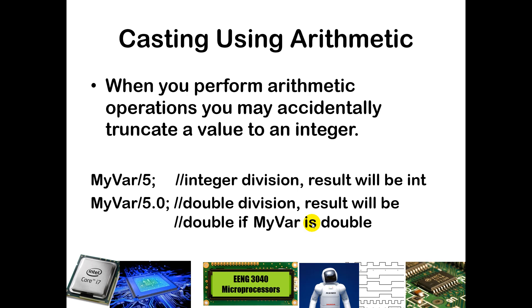When we're talking about our arithmetic, if you take an integer variable and divide it by 5, that will perform integer division, you will lose any remainder. If you have my variable divided by 5.0, now that 5.0 tricks it into doing double division, and you will not lose that precision, and it will keep the fractional result, especially if my var is of type double.